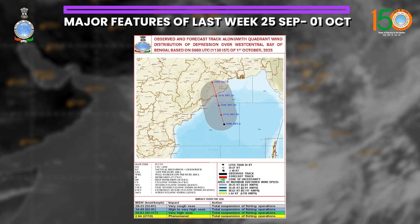After emerging into the Arabian Sea and moving nearly westward, it concentrated into a depression and persisted over the northeast Arabian Sea as of today, 2nd October. It is likely to move southwest towards the northwest Arabian Sea during the next three days.